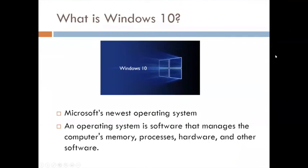What is Windows 10? It's Microsoft's newest operating system. What's an operating system? It's software that manages the computer's memory, processes, hardware, and other software. So basically, when you buy a computer, if it doesn't have an operating system, it's a nice shiny black thing on your desk that you can't use. So you need to know what operating system you have.